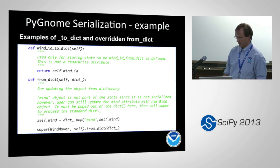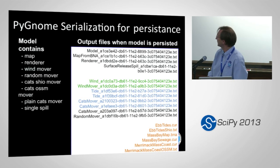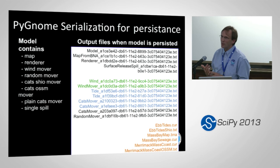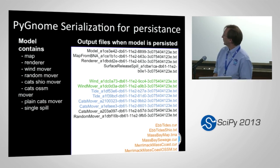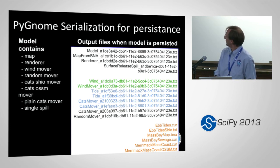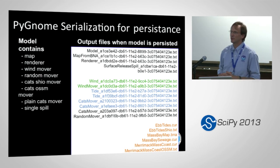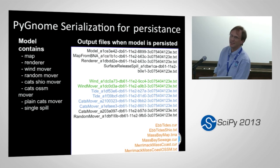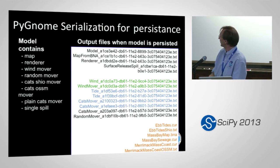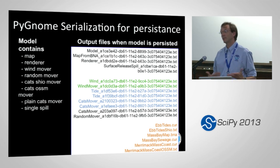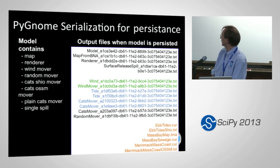Here's a serialization example for a model setup: the model itself has a map, a renderer, a wind mover, a random mover, and what we call a CATS/SHIO mover — a current scaled by tidal currents. All that gets saved, and each of those .txt files is actually JSON. Those long strings of letters and numbers are UUIDs — unique IDs for each object — so when stuff gets saved and loaded again, they can all refer to each other by a known unique identifier. And toward the bottom you can see the .cur file and .bna file — standard data files we load from — so you can look and see what the model was built from, and maybe replace the current file or wind data. If loaded from NetCDF, that would be there too.